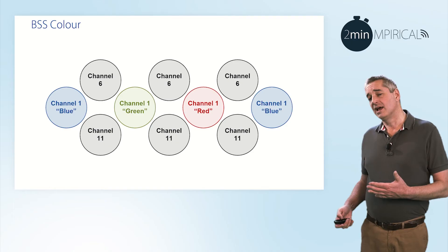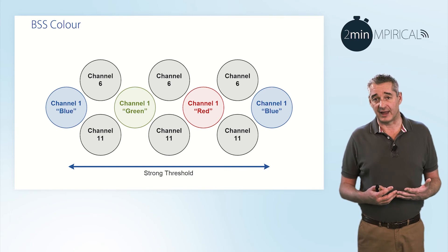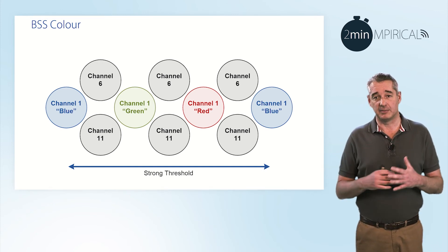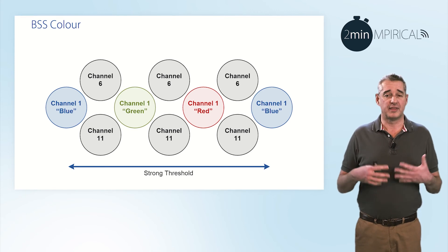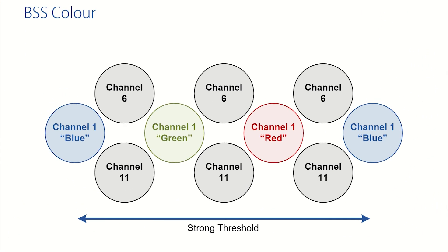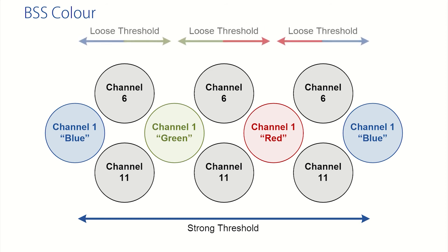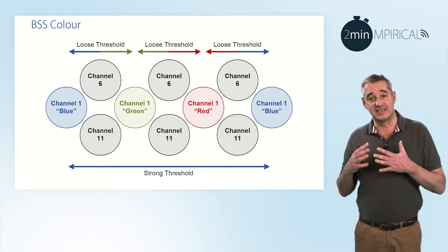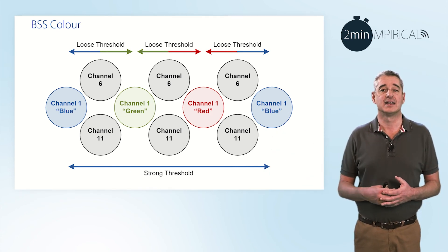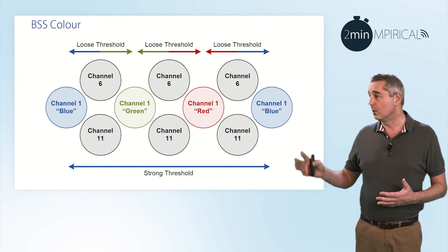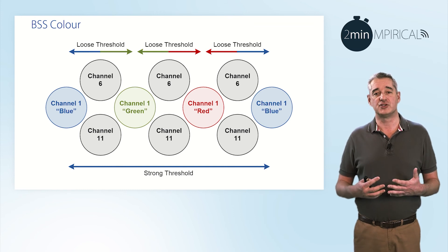So how does this actually affect the way that stations will operate? When a station senses the network and determines that the interference level from a particular access point or frequency is high, and they are both on the same colour, it will typically assume that the interference is from either the access point or stations operating on the same BSS set — hence it will apply a strong threshold. However, if it detects the carrier and determines it is coming from a station or access point on a different colour — green or red — then it will understand that this traffic is associated with a different BSS set, and therefore it can apply a looser threshold, enabling stations to seize the medium.